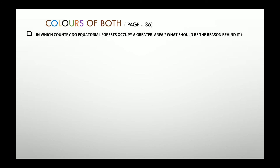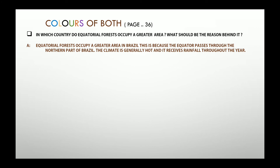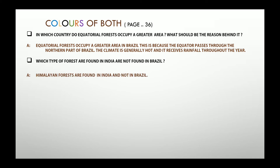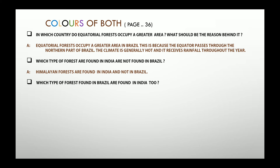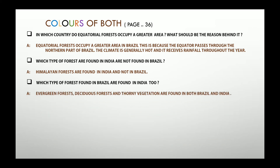Let us see answers to certain questions from textbook page number 36. In which country do equatorial forests occupy a greater area and what is the reason? Equatorial forests occupy a greater area in Brazil because the equator passes through the northern part of Brazil, the climate is generally hot, and it receives rainfall throughout the year. Which type of forests found in India are not found in Brazil? It is Himalayan forest — India is gifted with the Himalayas, so Himalayan forests are found in India and not in Brazil. Which type of forests found in Brazil are also found in India? It is the evergreen forest, deciduous forest, and thorny vegetation.